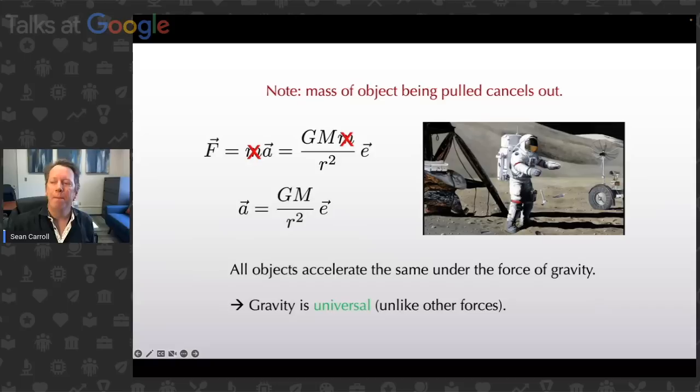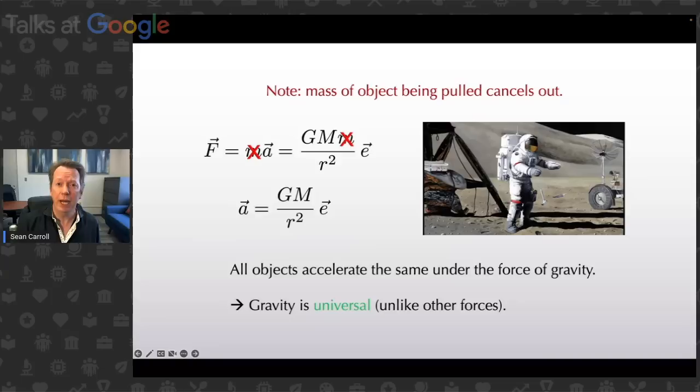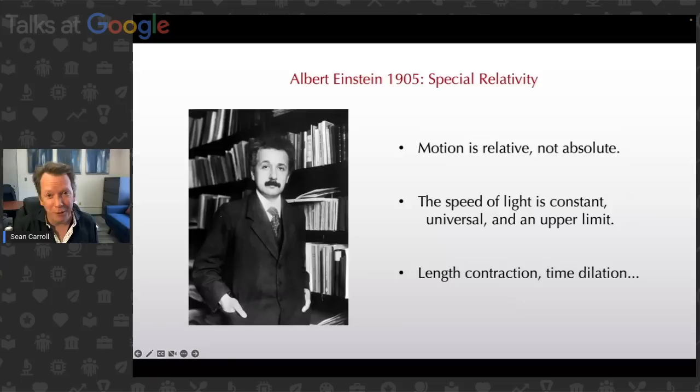What does this mean for gravity? It means something really provocative. If you drop an electrically charged particle in an electric field, how it moves depends a lot on the features of the particle. But gravity says every object falls at the same rate — this is very special. Gravity is unlike other forces. Newton noticed this and said 'that's curious,' but didn't know what to make of it. Eventually we figured it out because of Albert Einstein.